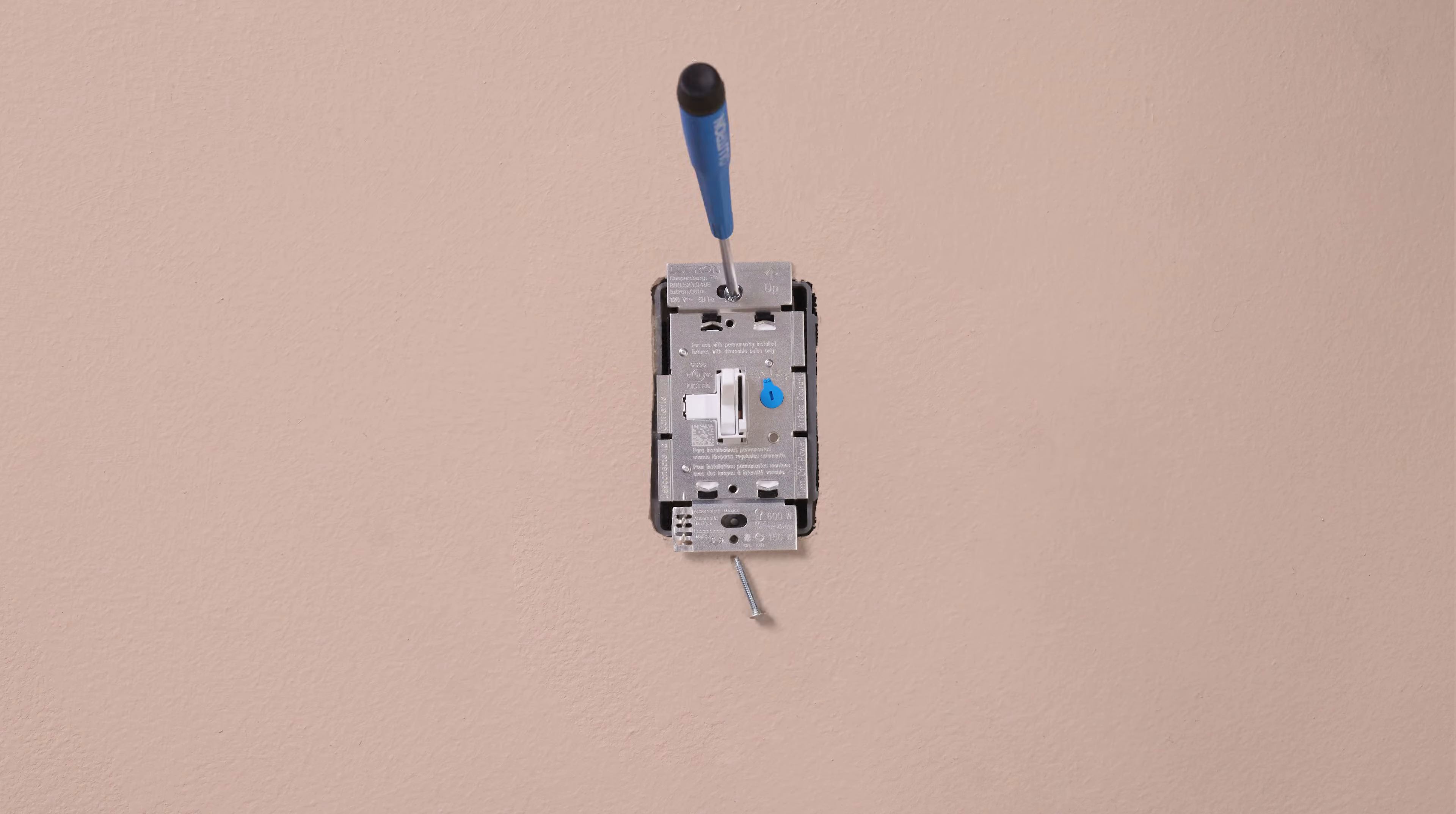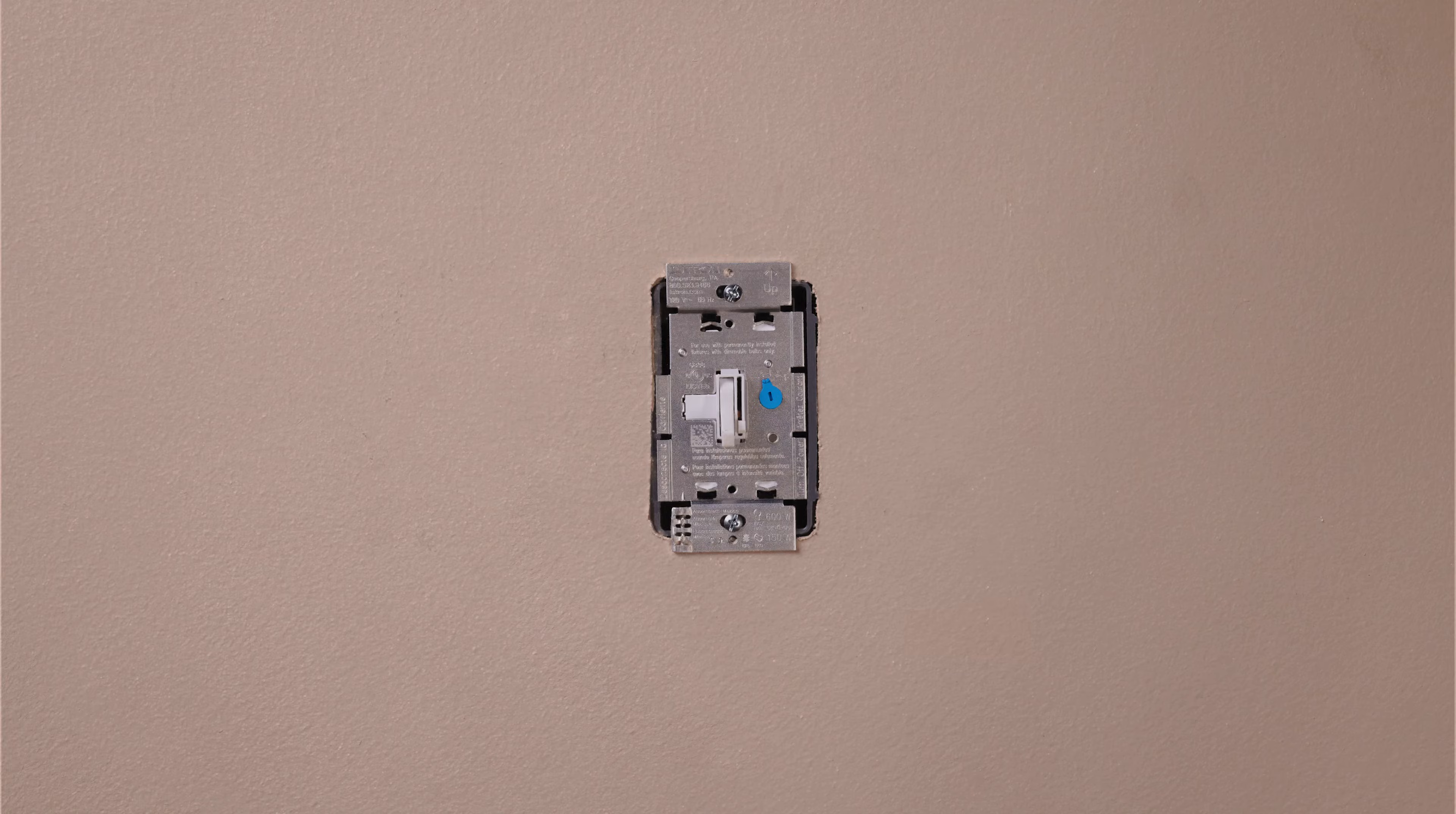Mount the dimmer in the wall, then turn the power back on at the breaker and check that the dimmer turns the lights on and off.